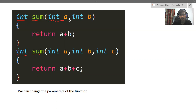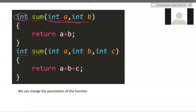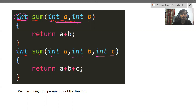In polymorphism, two things can change: the parameter as well as the return type, but the function name will remain the same. In the first function we have two parameters — int a and int b — and in the second function we have three parameters — int a, int b, and int c. The first function returns a plus b, and the second returns a plus b plus c. The first calculates the sum of two numbers, the second calculates the sum of three numbers.